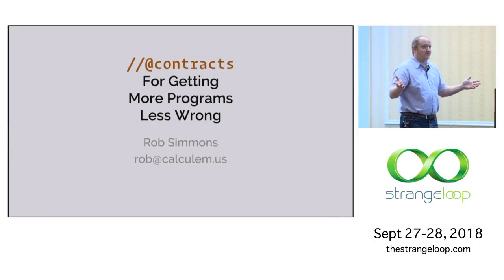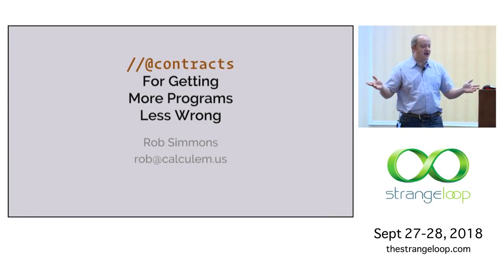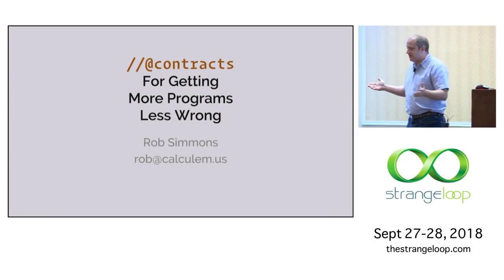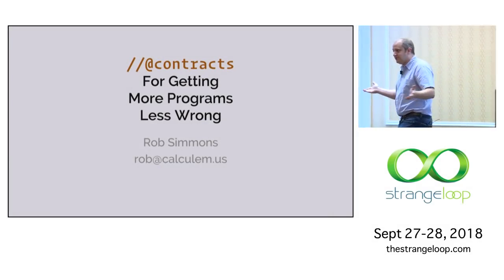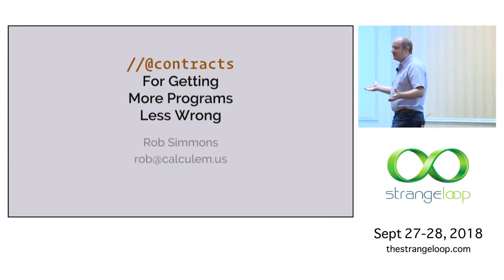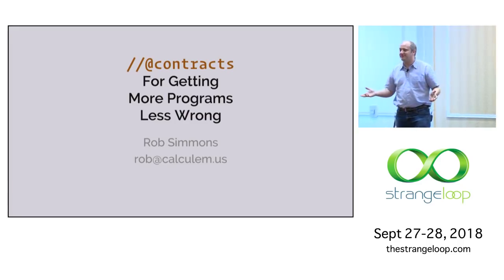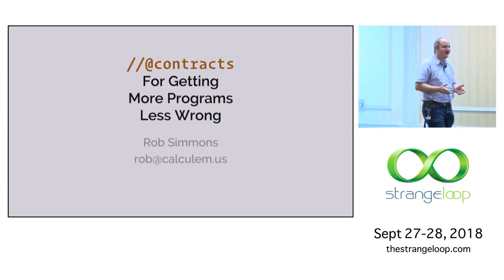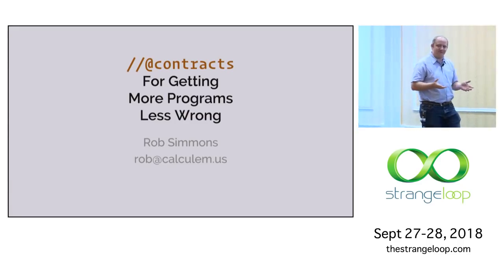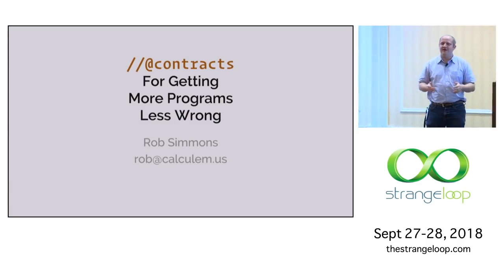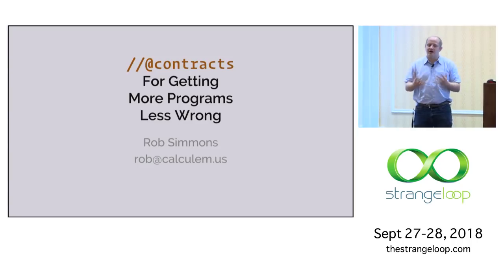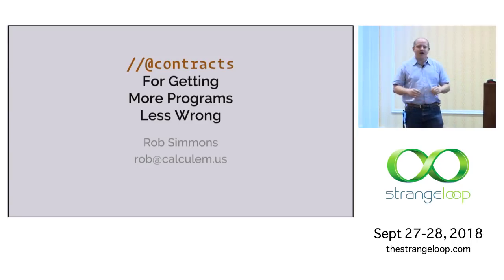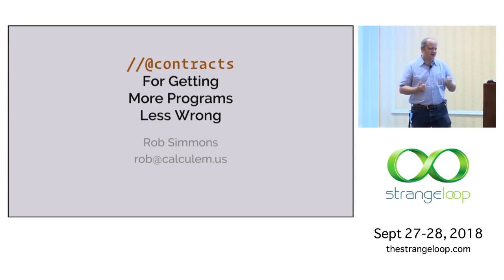My name is Rob Simmons, and I'm an independent computer science educator and curriculum designer in Raleigh, North Carolina. I'm talking today about an idea called contracts, and using contracts for getting more programs less wrong.